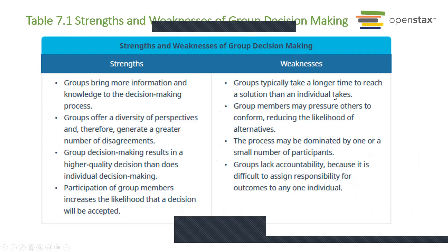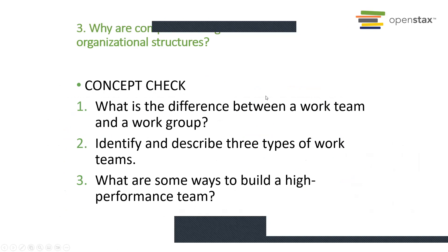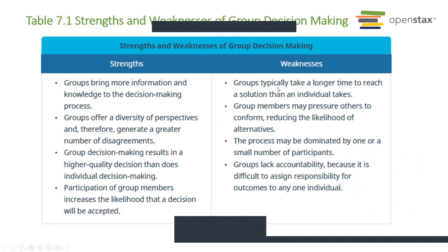One thing highlighted as a weakness is that groups typically take a longer time to reach a solution than individuals. There's so much diversity in group work — different perspectives and different perceptions — so it takes longer when collaborating to come up with a decision. That's one reason why sometimes people don't like group work. You also have to think about how many members are in your group. A large group of eight people might be difficult, but a group of just three is more conversational and has more ease in making a decision.